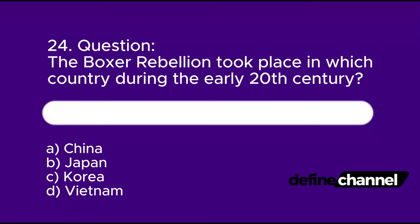Question 24: The Boxer Rebellion took place in which country during the early 20th century? A. China, B. Japan, C. Korea, D. Vietnam. Please determine which is the correct answer.